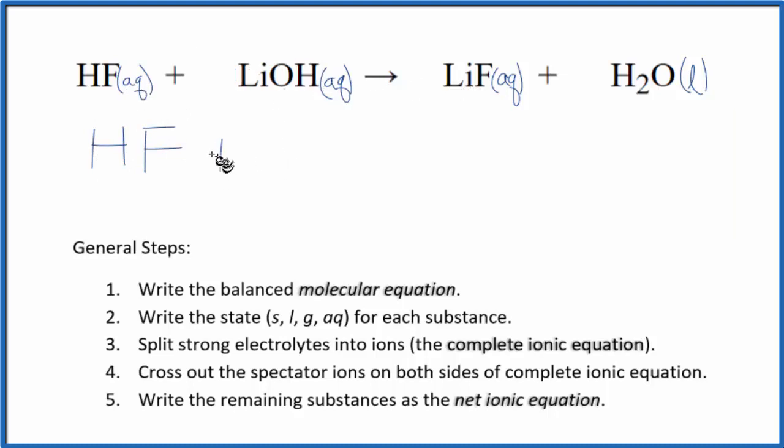Plus, lithium that's in group 1 has a 1 plus charge, and the hydroxide has a 1 minus. So we'll have Li plus, plus the hydroxide ion, OH minus. And those will be the reactants. In the products, we have lithium fluoride. So we'll have Li plus, plus the fluoride ion, F minus. And then water, we don't split liquids apart, keep that as H2O.